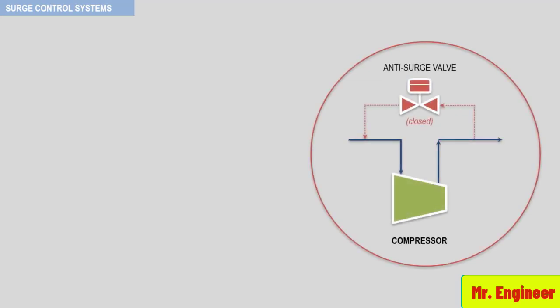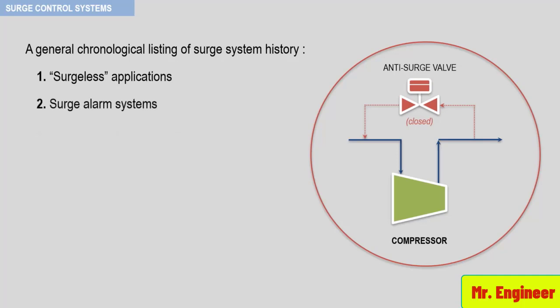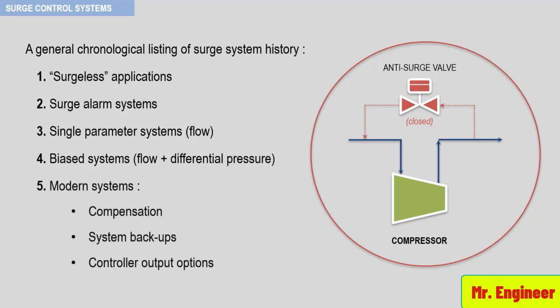The figure that you are about to see now presents a chronological listing of surge system history. First, we'll list them, then we'll cover each one in detail. The first system developed for the process industry is the surgeless applications. Then, surge alarm systems, single parameter systems, biased systems based on flow and differential pressure, and then finally, modern systems used extensively today in the process industries.